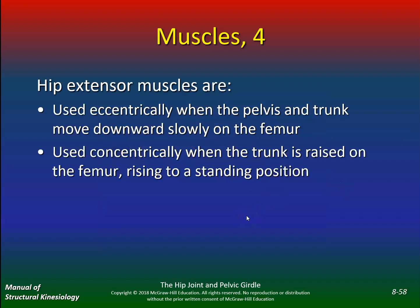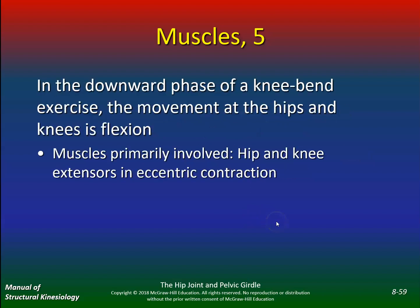Hip extensors are used eccentrically when the pelvis and trunk move downward slowly on the femur, and concentrically when the trunk is raised on the femur — rising to a standing position. In the downward phase of a knee bend exercise, the movement at the hips and knees is flexion. Muscles primarily involved are hip and knee extensors in eccentric contraction.